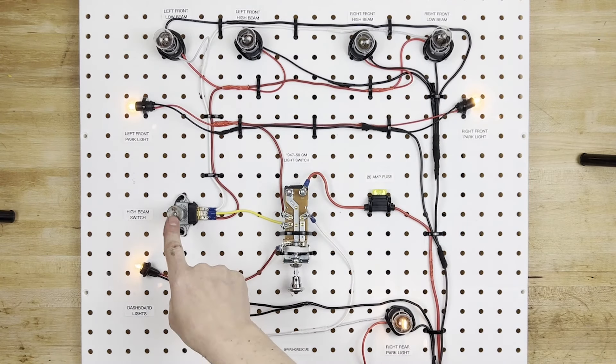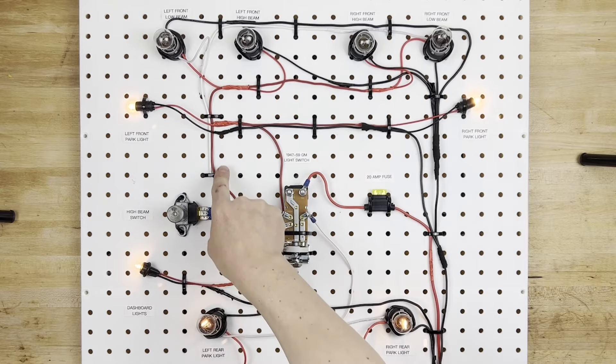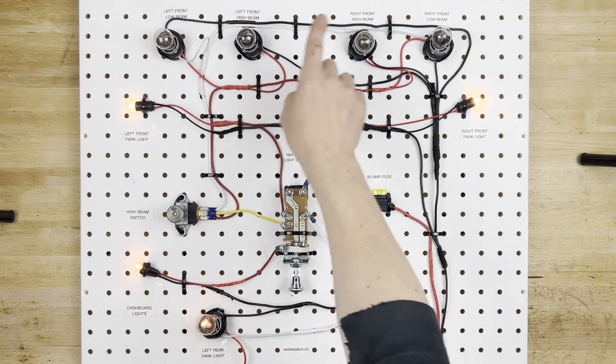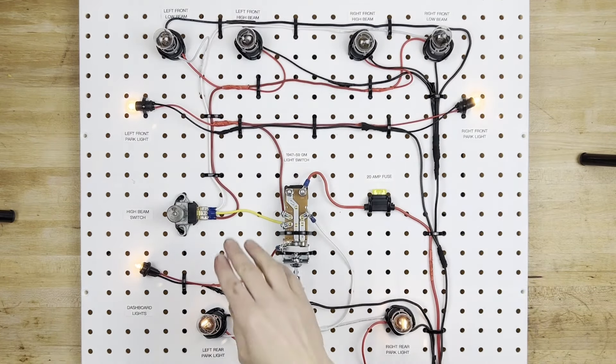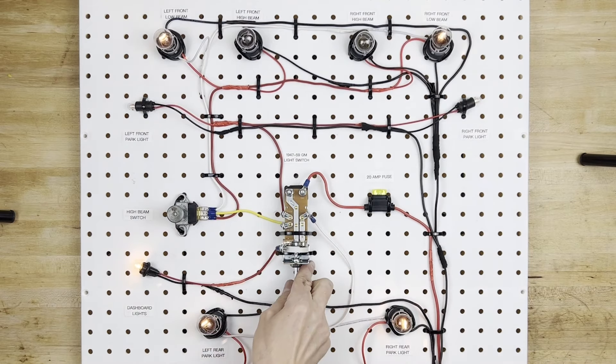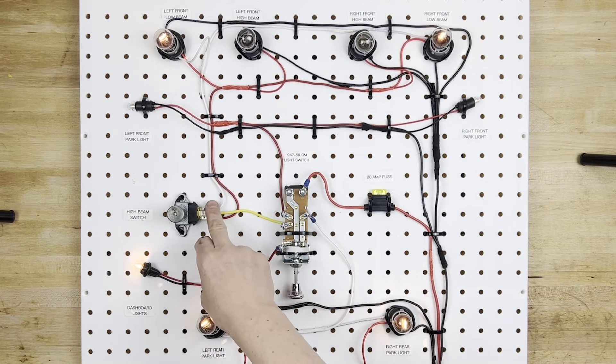So when you turn the high beams on, this thing is going to be powered up, and it's going to send power to all four bulbs.